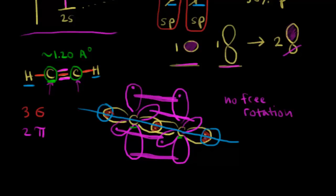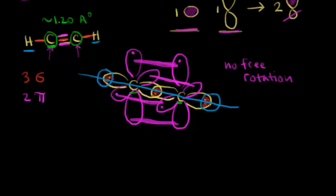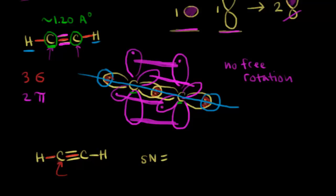Let's analyze acetylene one more time using steric numbers. The steric number equals the number of sigma bonds plus lone pairs. For this carbon, there's one sigma bond to hydrogen and one sigma bond within the triple bond (a triple bond has one sigma and two pi bonds), giving two sigma bonds plus zero lone pairs — a steric number of two. A steric number of two means two hybrid orbitals, made from one s and one p orbital, so the carbon is sp hybridized. This gives a linear geometry with bond angles of 180 degrees.